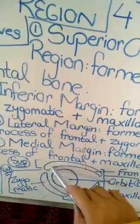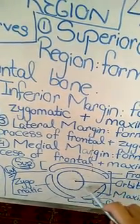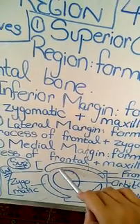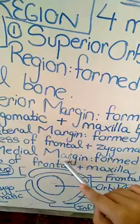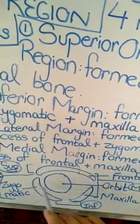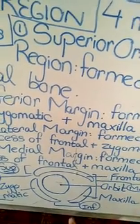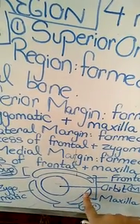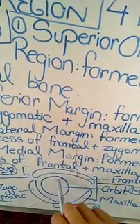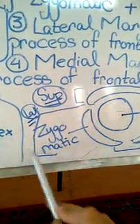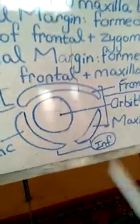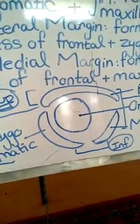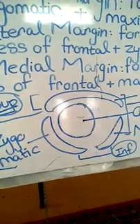The roof or superior wall of the orbital region is formed by the frontal bone, which separates the orbital region from the anterior cranial fossa. The floor of the orbital wall is formed by the maxilla bone. Below the maxilla there is a maxillary sinus, and the maxilla separates the orbit from that maxillary sinus. On the lateral side, the zygomatic bone forms the lateral wall. Medially, the ethmoid bone separates the orbit from the ethmoidal sinus.